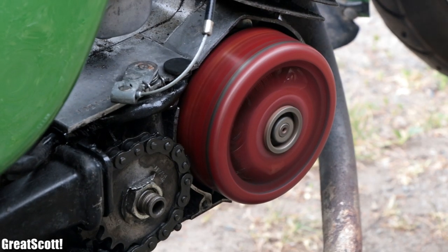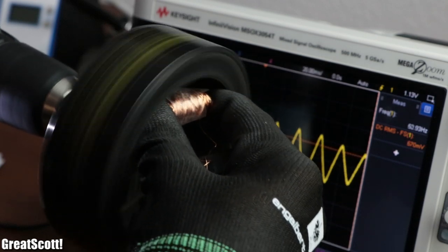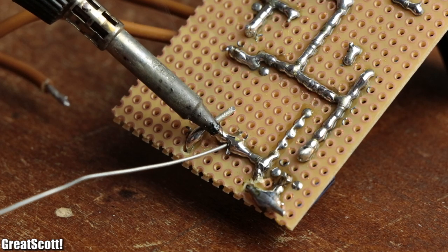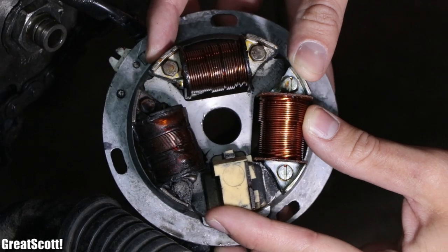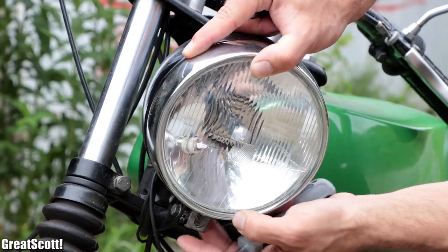So in this video, let's find out how the electrical energy of such a moped is created and how we can use pretty cheap and easy to find parts to convert the old 6 volt system into a 12 volt one. Let's get started.